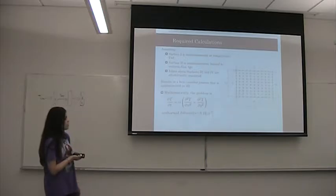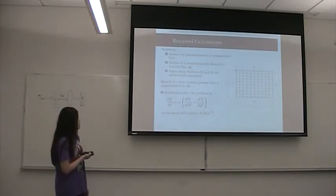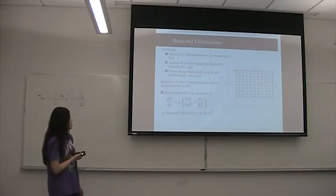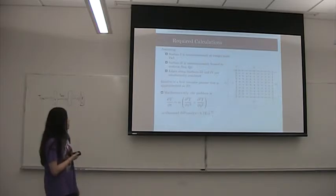And the edges along surfaces 3 and 4 are insulated, and then this results in a heat transfer process that's approximated to 2D. The equation is here where alpha is the thermal diffusivity.